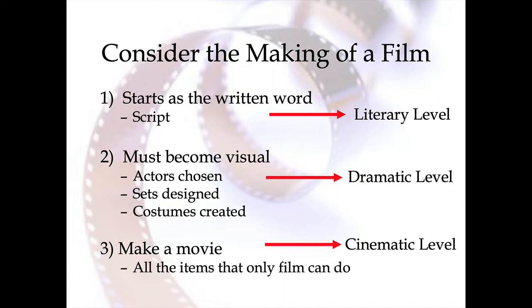And then ultimately you're going to make that movie. You're going to use the camera to frame, use angles, have motion, add special effects and editing — things that only a movie can do. So just in the making of a film, moving from script to making it visual to putting it all on film, that naturally overlaps with these three levels that we're talking about.